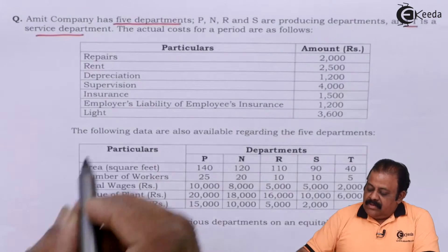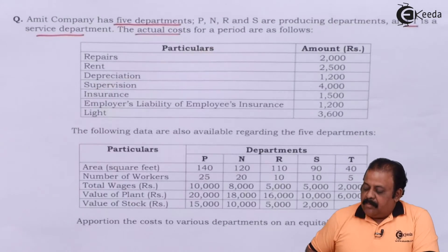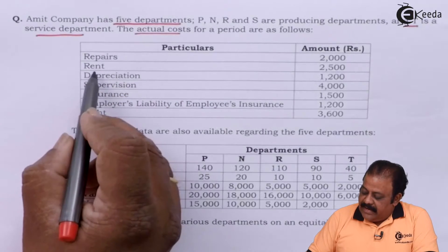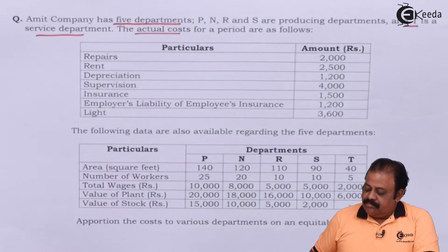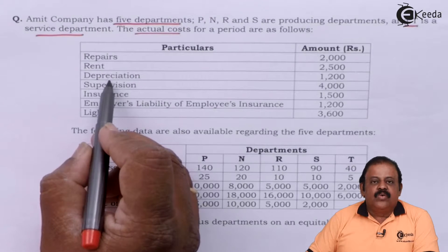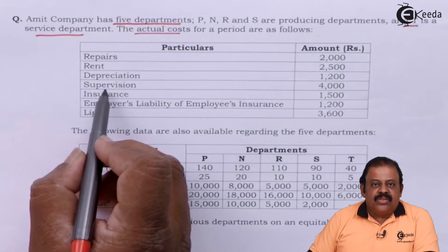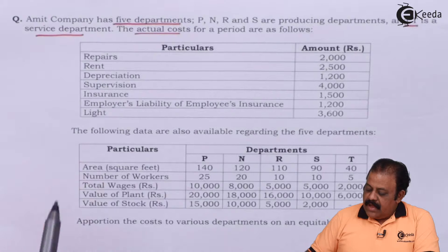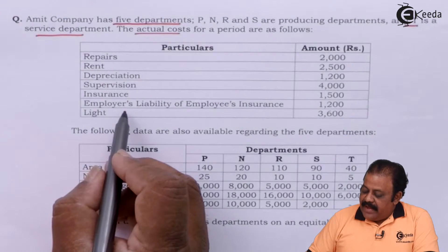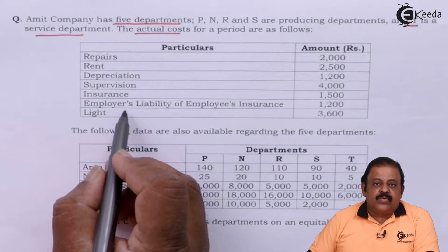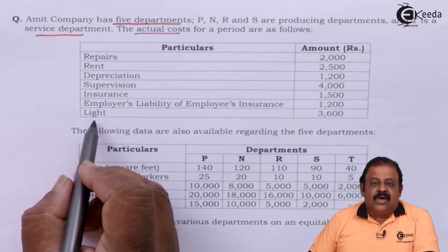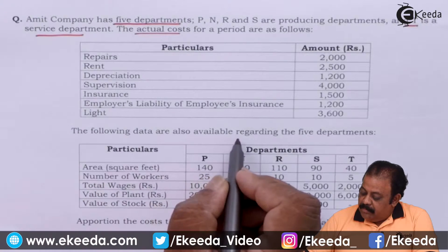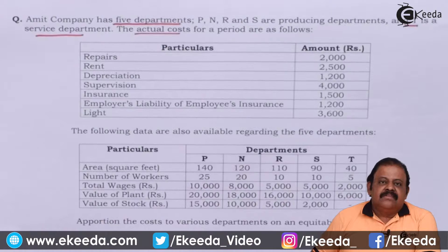The actual costs for the period are: repairs 2,000; rent 2,500; depreciation 1,200; supervision 4,000; insurance 1,500; employers liability of employees insurance 1,200; and light 3,600. The following data are also available regarding the five departments, along with the parameters for allocating expenses.